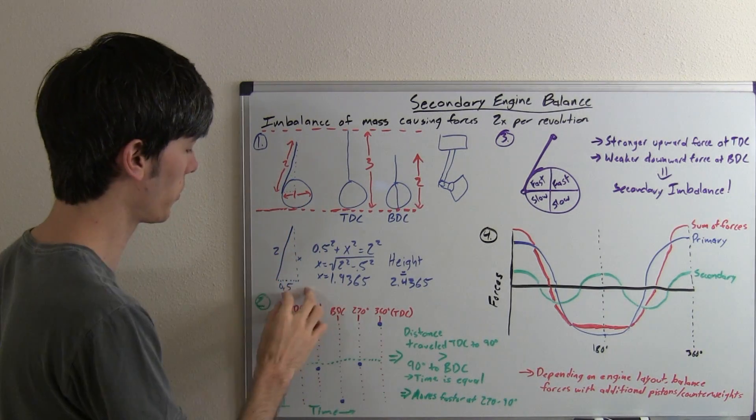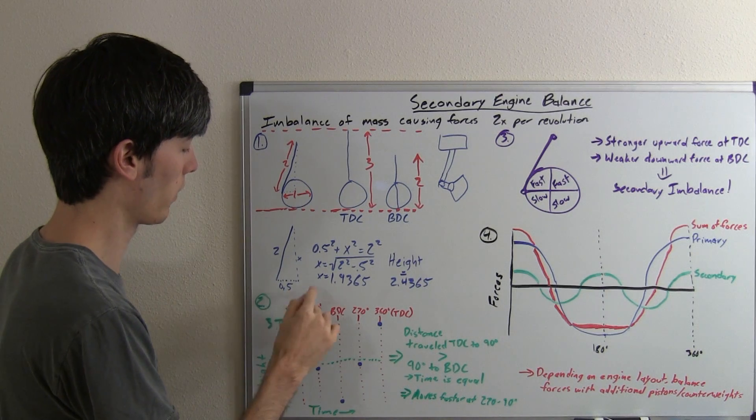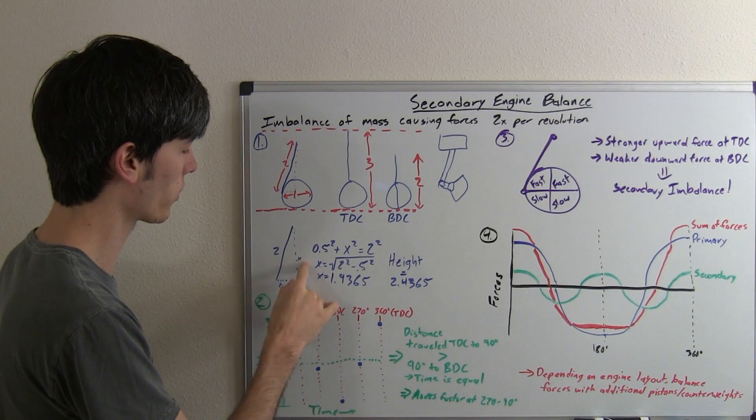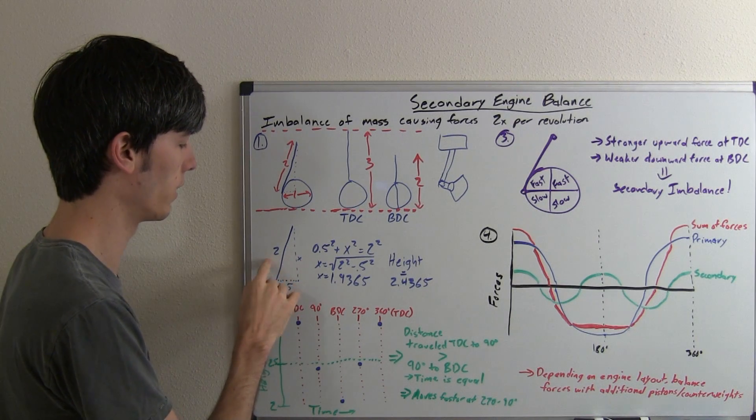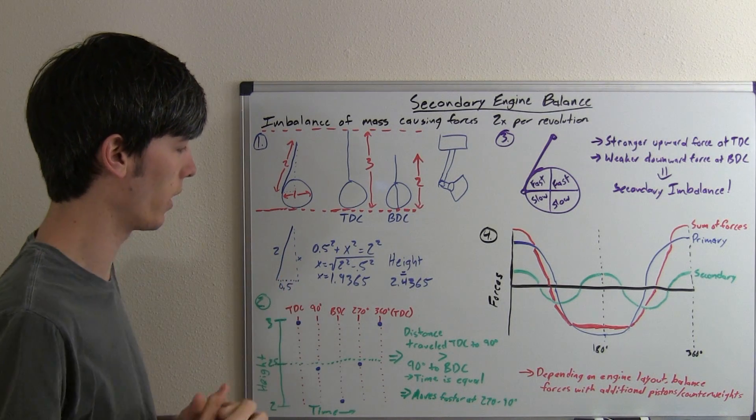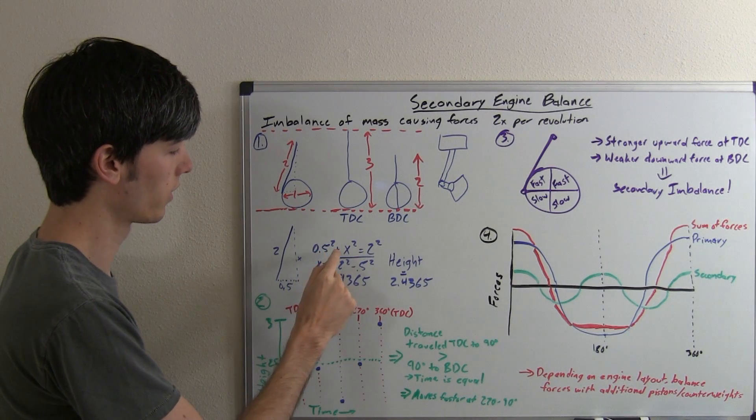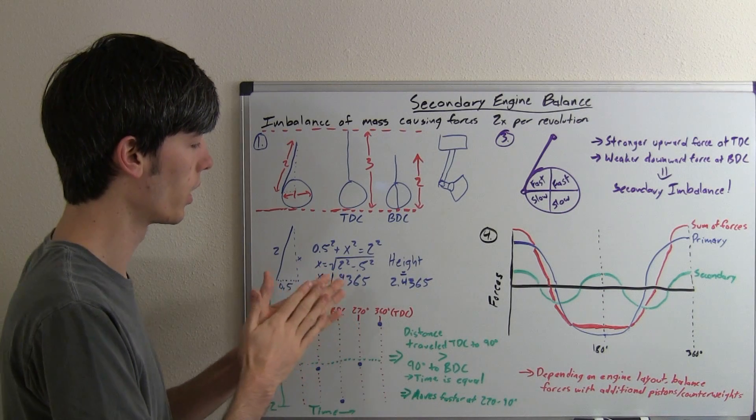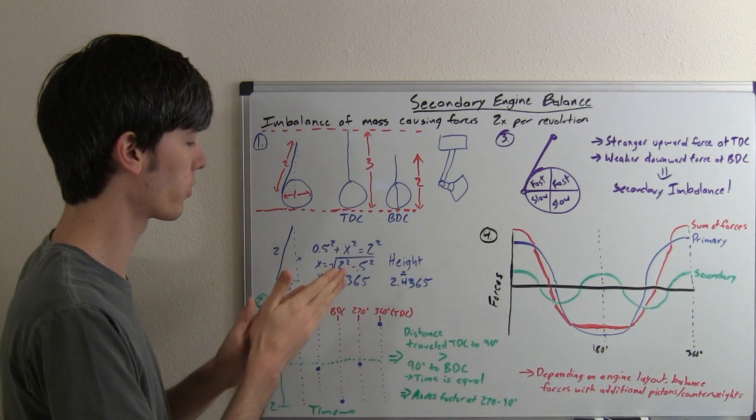Pythagorean theorem says if you have a right angle triangle, you can take one side squared plus the square of the other side, and that will be equivalent to the hypotenuse squared. So 0.5 squared plus x squared equals 2 squared. So x equals the square root of 2 squared minus 0.5 squared.